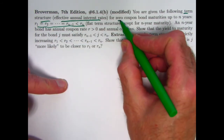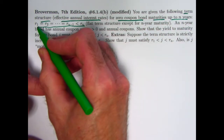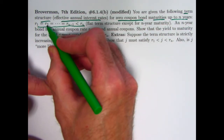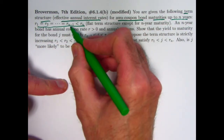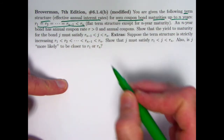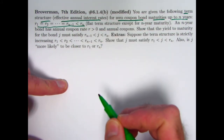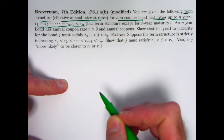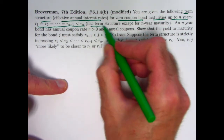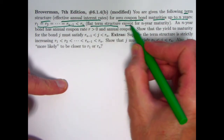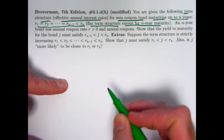These are zero coupon bond maturities up to n years: one year, two years, three years, et cetera, n−1 years, and n years. These are effective annual interest rates for zero coupon bonds. You would call this a flat term structure except for the n-year maturity, which in this case is higher. We could have also considered what if it's lower.